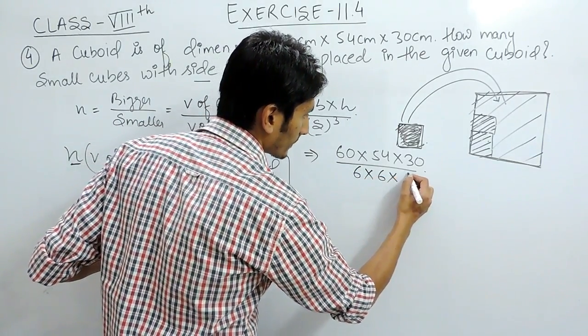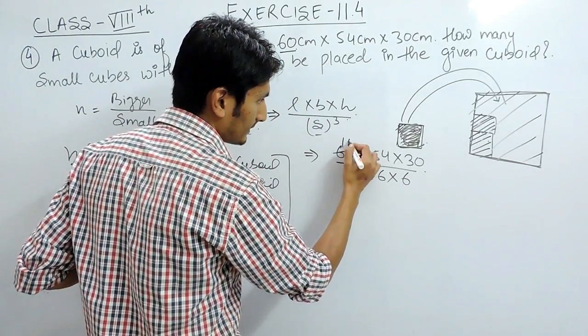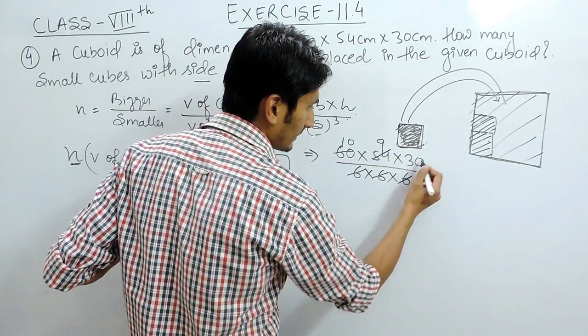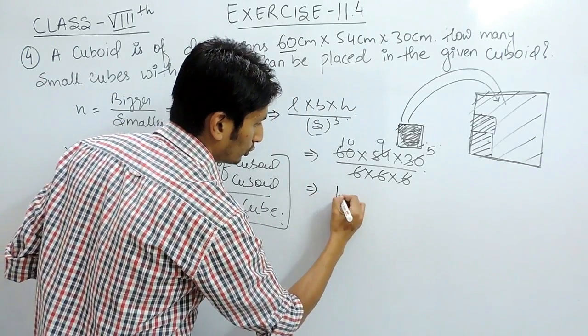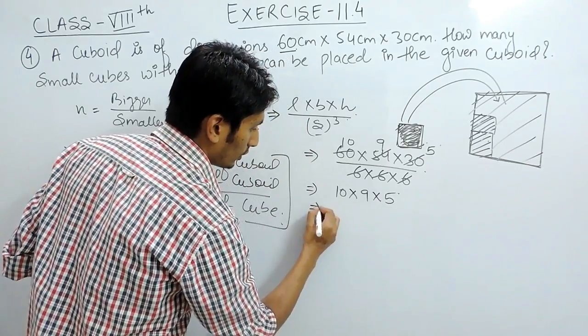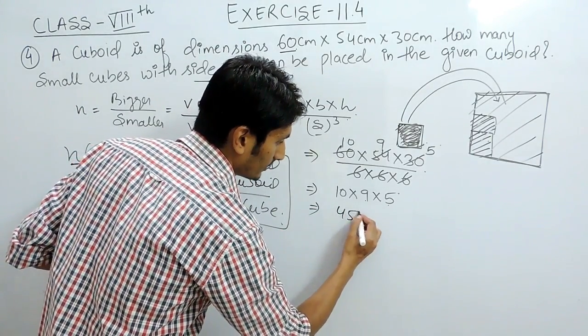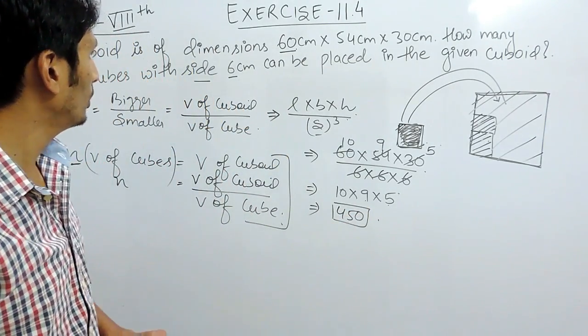This can be cancelled 10 times, this can be cancelled 9 times, and this can be cancelled 5 times. So the number of small cubes should be 10 × 9 × 5, which is 450. You would be needing 450 small cubes to fill this bigger cuboid.